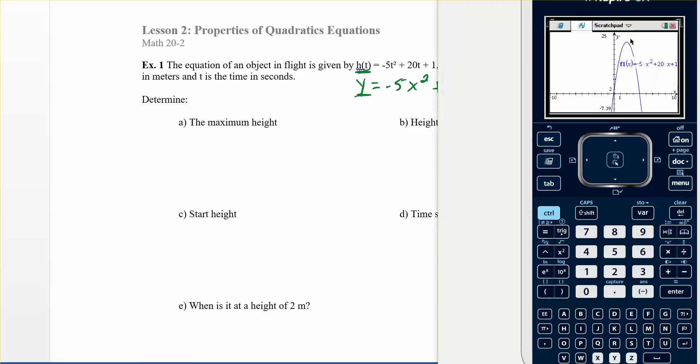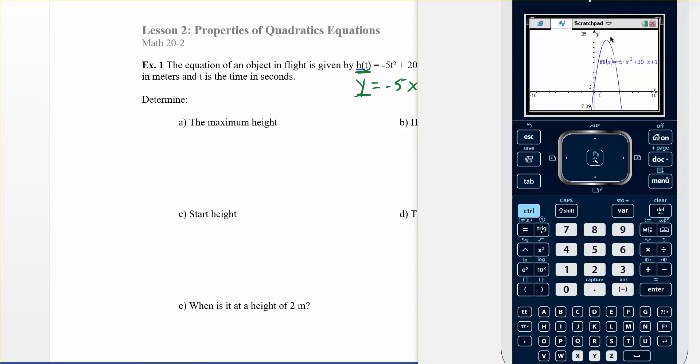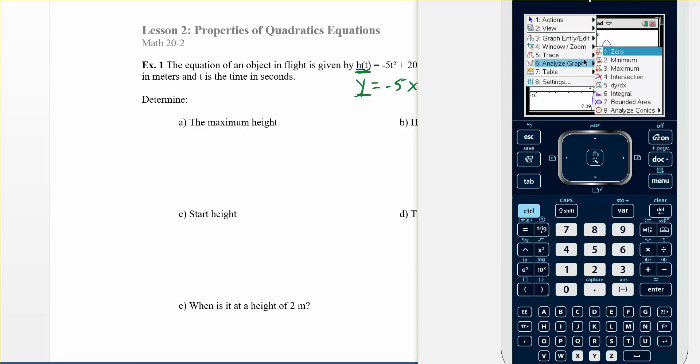So to do that, what we need to do is go menu, analyze graph, and we're looking for the maximum in this case, right? Because there is a maximum height that it's going to be. So it's going to tell us the point that the maximum would be. If the graph was flipped upside down, so it was like a smiley face, then we'd be looking for the minimum. But this one, we're looking for the maximum, so the top height.